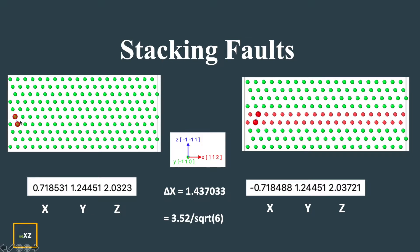In the stacking fault, this is the initial separation of the perfect crystal, and these are the XYZ distances between the two atoms. When you create a stacking fault these two atoms move, so the Y and Z positions remain the same but the X position changes. You just need to displace in the X direction by the lattice parameter divided by the square root of 6.